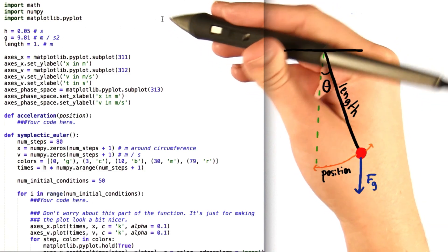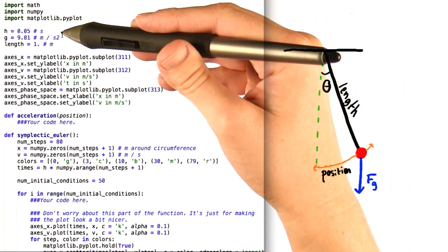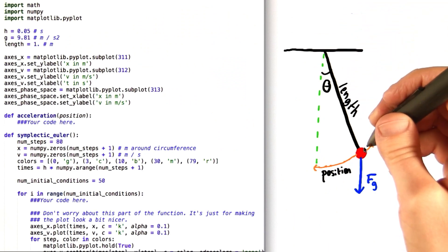As always, we've given you some code to help you out. Here you can see the time step, the magnitude of the acceleration due to gravity, and the length of the pendulum, which is just the length of the string to which the bob of the pendulum is attached.